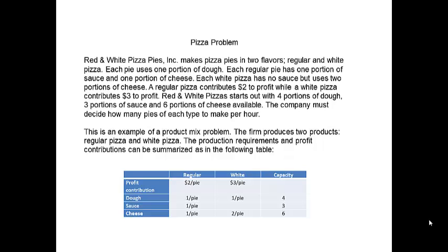The company must decide how many pies of each type to make per hour. This is an example of a product mix problem — the firm produces two products: regular pizza and white pizza. The production requirements and profit contributions can be summarized in a table. You can tell this is a linear programming situation because the two types of pizza share ingredients. The shared ingredients are limited or constrained. We want to solve for the optimal number of regular and white pizzas.